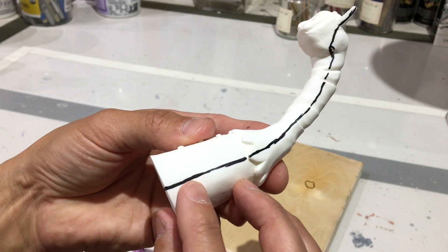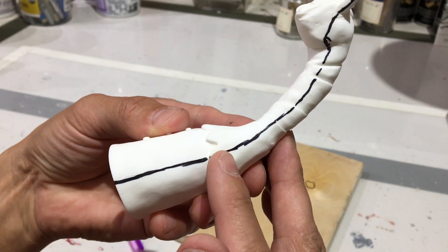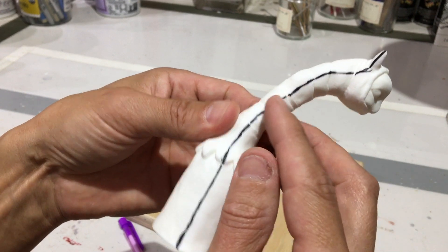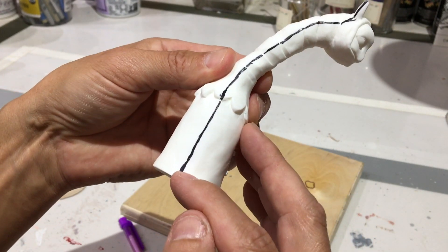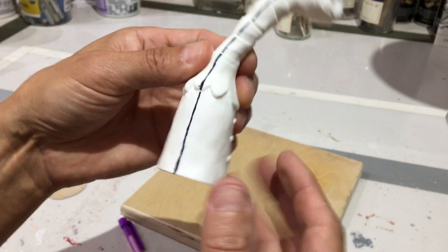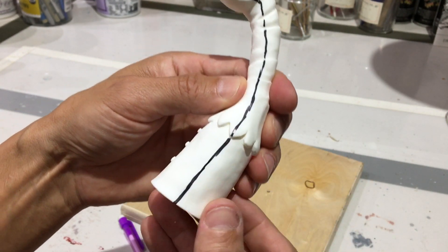Another thing I do is I try to follow a path here that's going to be the easiest to clean up. Wherever this black line is, that's where you're going to get a little bit of flashing after you pour the resin. So this is always going to be where you're cleaning something up with either an exacto knife or some sandpaper.